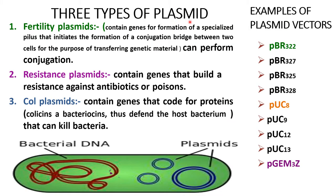There are three types of plasmids. Fertile plasmids contain genes for the formation of specialized pilus that initiate a conjugation bridge between two cells for transferring genetic material. Resistance plasmids contain genes that build resistance against antibiotics or poisons. Col plasmids contain genes that code for proteins called colicins, a bacteriocin that can kill bacteria. Examples of plasmid vectors include PBR322, PBR327, POC8, POC9, and PGM3Z.